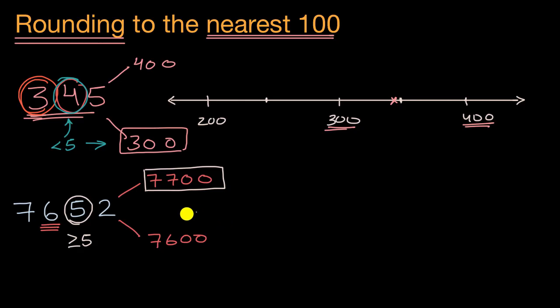And we can see that on a number line as well. Let me draw a number line here. And so let me just start at, let's say that this is 7,500. This is 7,600 or 7,600. And this right over here is 7,700. And this would be 7,650 right over here.